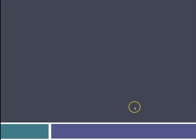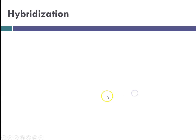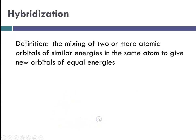Hello, this is Ms. Augustine, and we are continuing our notes for Chapter 6. This time we are at Chapter 6, Part 4, and we're still talking about covalent bonding, but today we're going to introduce the concept of hybridization. We'll just give you a little brief taste of this in Honors Chemistry. If you go on to study chemistry at the AP level or in college, you will spend a lot more time on it.